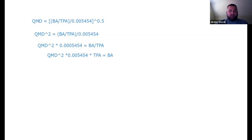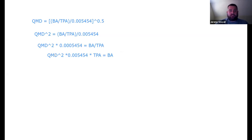So: first we squared both sides to remove the square root; then we multiplied by 0.005454 to move it out of the denominator; then we multiplied by trees per acre. Now, if I know the quadratic mean diameter — because I'm drawing specific QMD lines — and I know trees per acre from the x-axis, I can predict basal area on the y-axis and draw those lines.